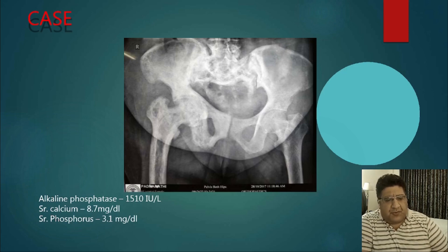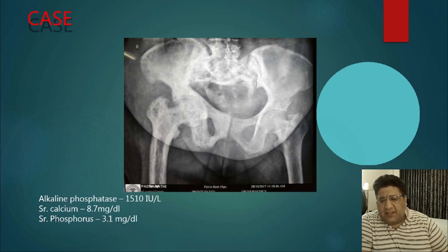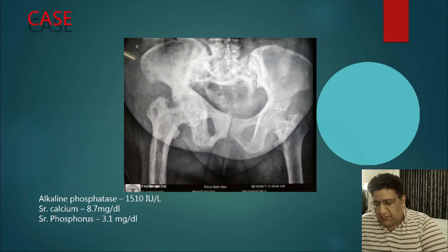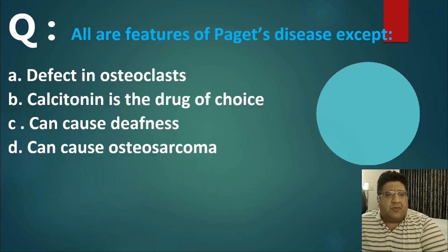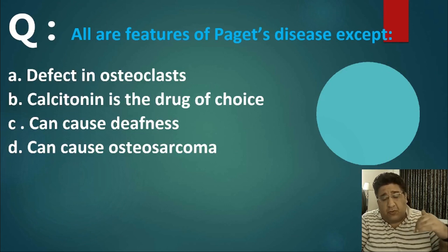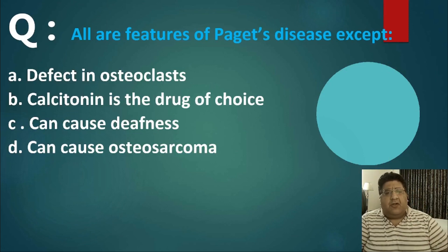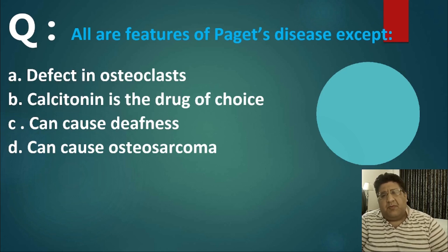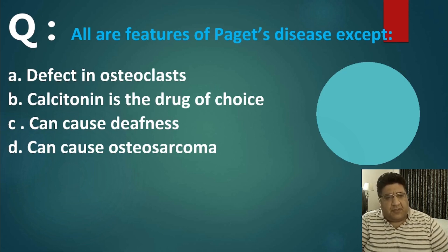On the X-ray you can also see some protrusion. ALP of 1510 — about 10 times normal — while other markers are normal. Classical Paget's. Revisiting the MCQ: defect in osteoclast — yes; calcitonin as overall drug of choice — no, it is specifically for pain relief; can cause sensorineural hearing loss due to vestibulocochlear nerve compression — yes; can cause osteosarcoma — yes, it is the most common pre-malignant lesion for secondary osteosarcoma with about 1% conversion rate. Answer is B.